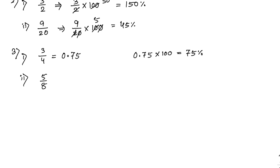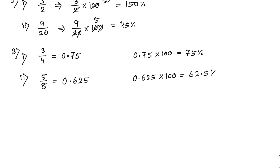Next one: 5 by 8. First convert to decimal: 5 by 8 equals 0.625. Now change it into percentage by multiplying with 100, it becomes 62.5 percent.